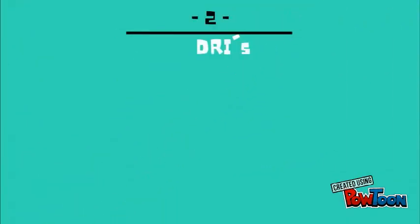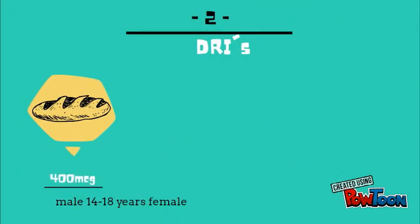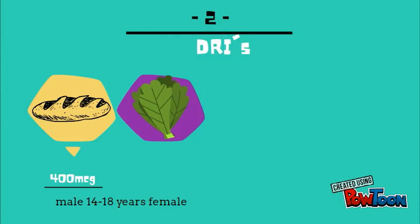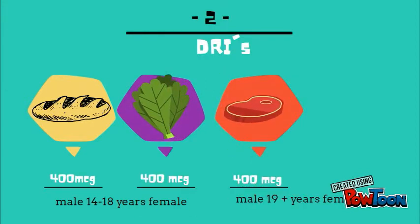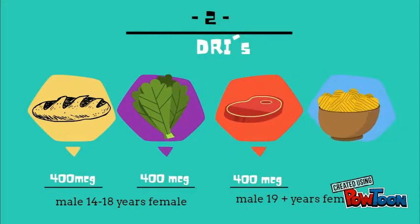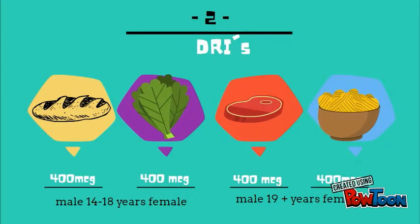The DRIs are 400 micrograms for males and females 14 to 18, and 400 micrograms for males and females 19 years and up. So, 400 straight across the board.